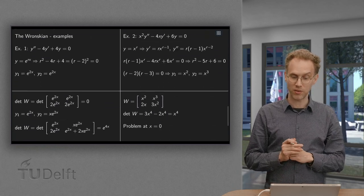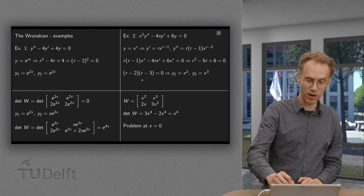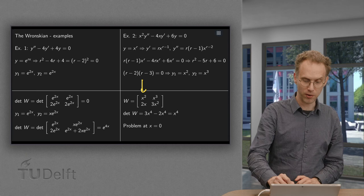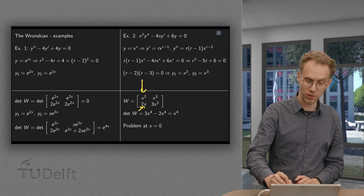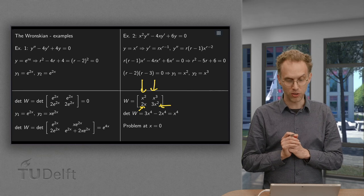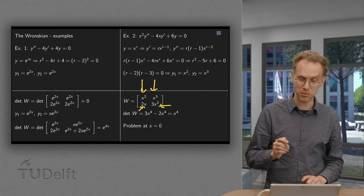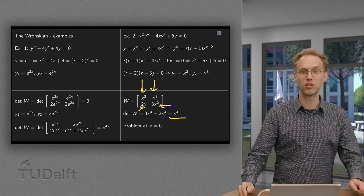Well, let's check whether they are independent using the Wronskian. So y₁ = x², y₁' = 2x, y₂ = x³, y₂' = 3x². Now we compute the determinant. We get 3x⁴ - 2x⁴ = x⁴.